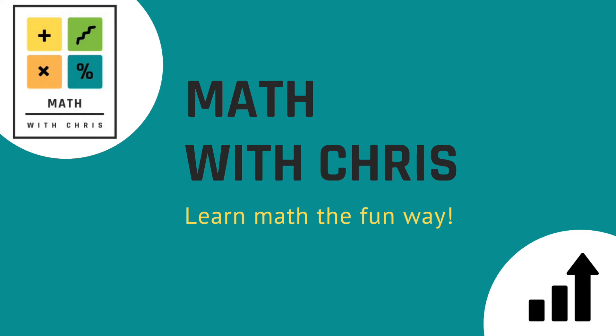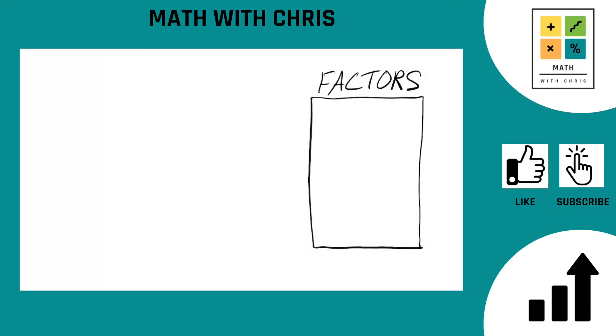What's going on everybody? Math with Chris, another factor tree exercise here. We are going to dominate the number 98.